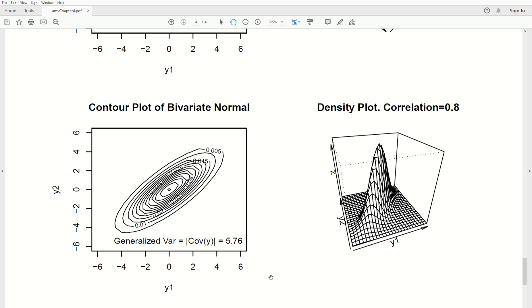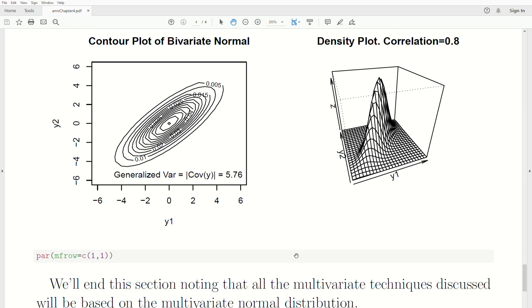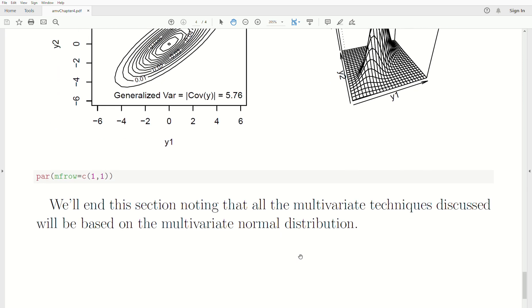And so, that's what the generalized variance is describing. It's the volume of that ellipse to encompass the data. And again, this is intuitive interpretations of these values. Okay. And so, we're going to end this section. We're approaching 10 minutes.